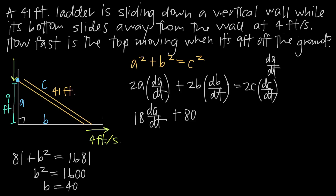So we have plus 80 times dB/dt. This is the rate of change of b — how fast this side is changing. We've been told it's increasing at 4 feet per second, so dB/dt is positive 4. Then on the right side we have 2 times c, and c is 41, giving 82 times dC/dt. But c is not changing at all — the length of the ladder is fixed — so dC/dt equals 0.